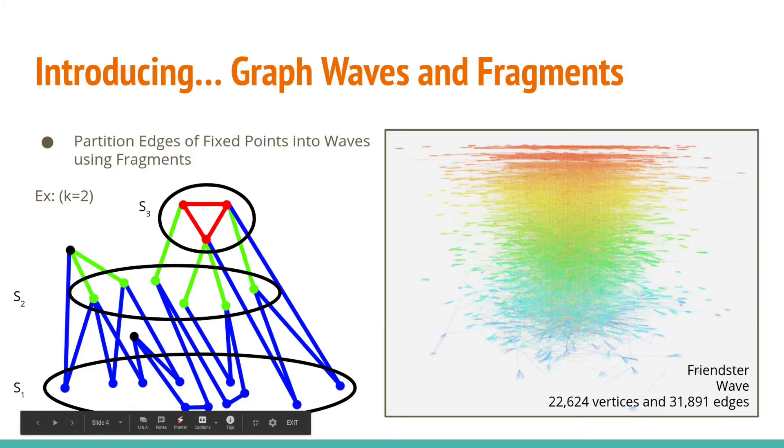The edges with at least one vertex in the seed set are labeled as the first fragment and removed. Here, that would be the blue edges. Once removed, the degree of the fragment vertices that were not in the seed set are updated, and those with degree less than K are selected as the next seed set, S2 in this example.